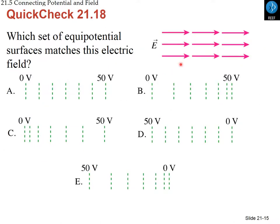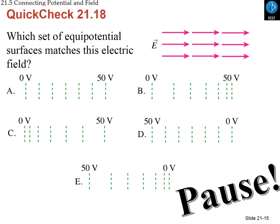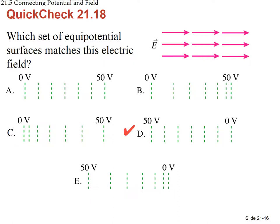For a uniform field — where all the arrows are identical in length and direction — the equipotential surfaces must have the same delta V over d everywhere, so the equipotential lines are uniformly spaced throughout.